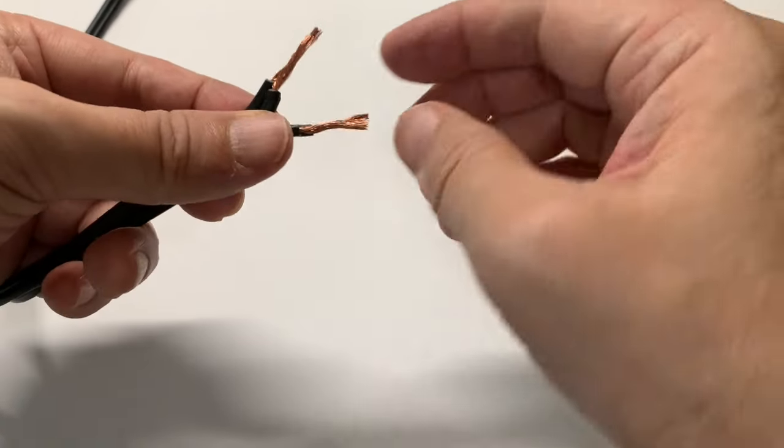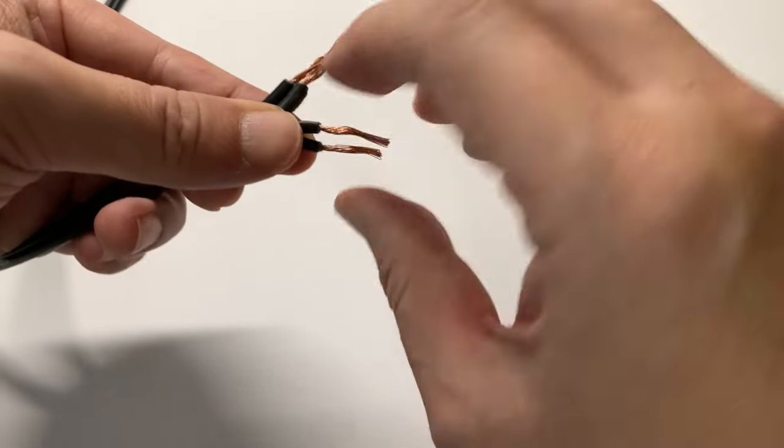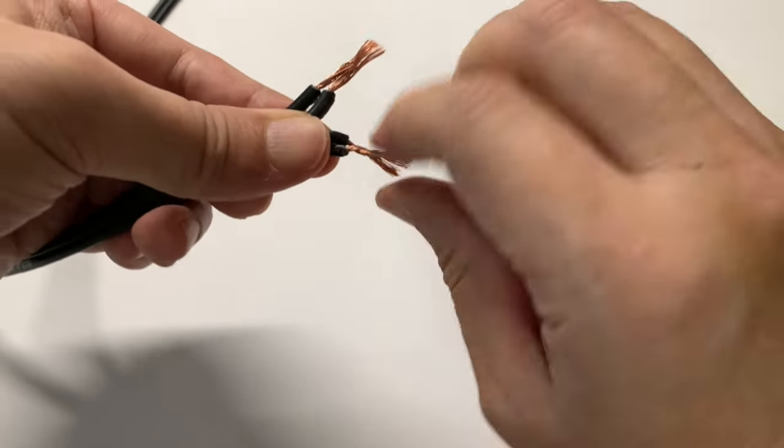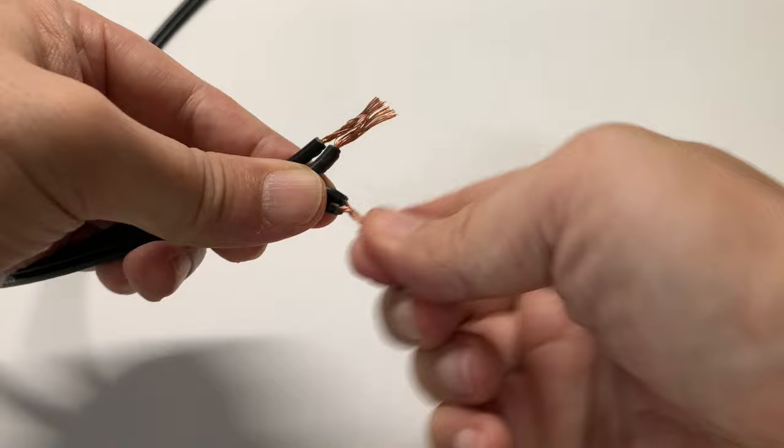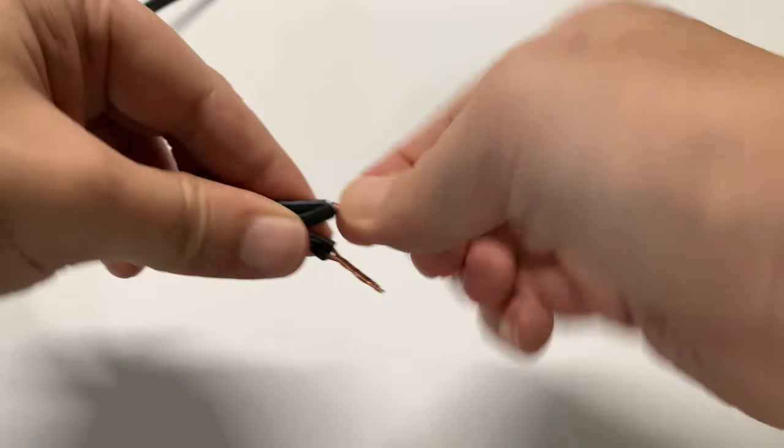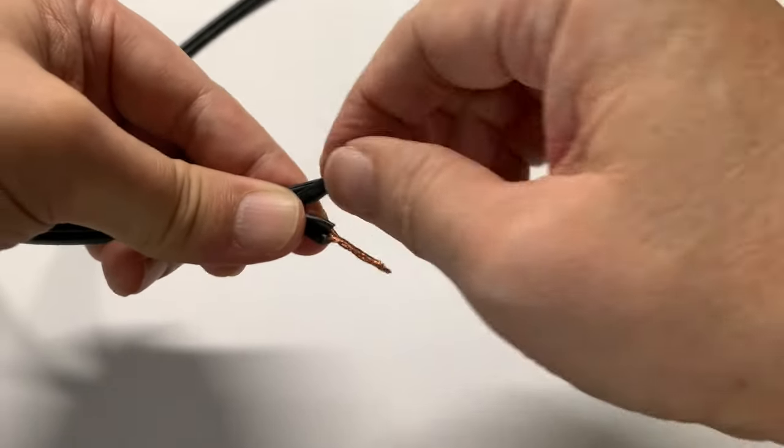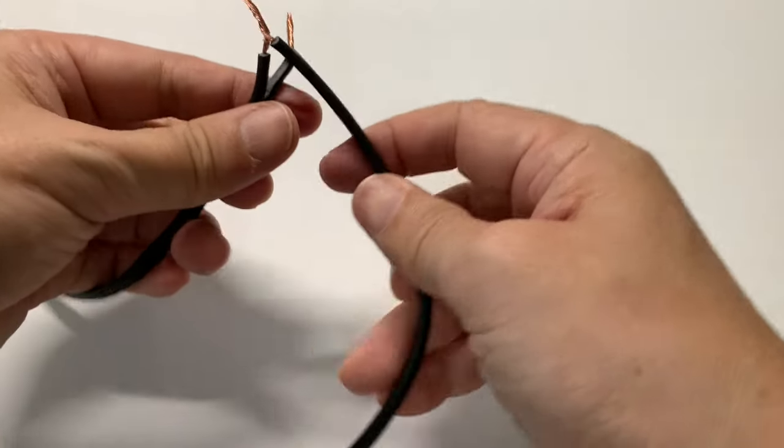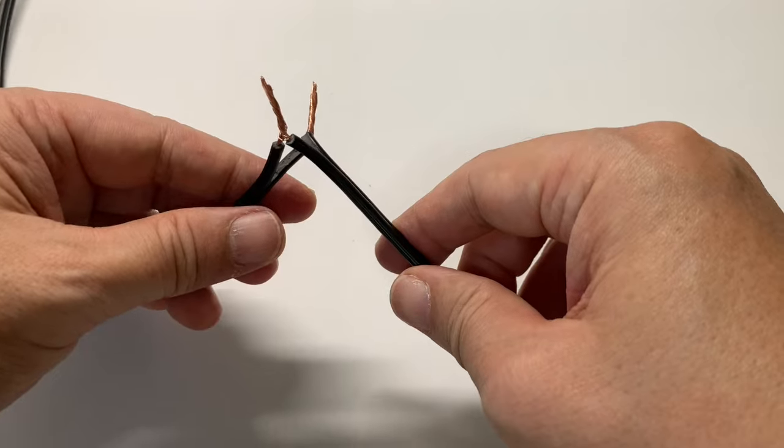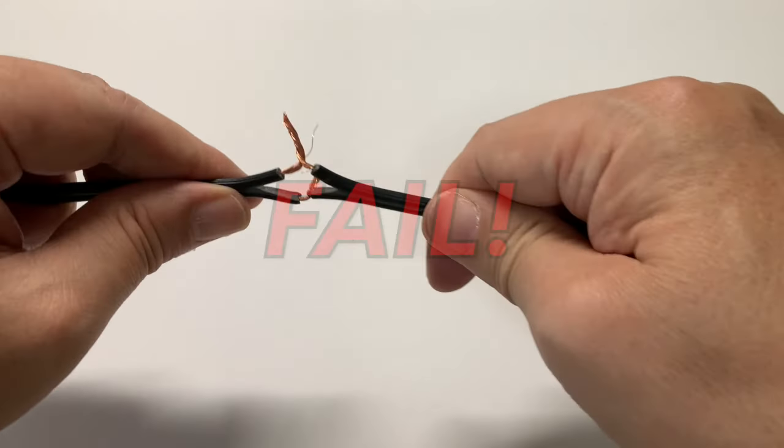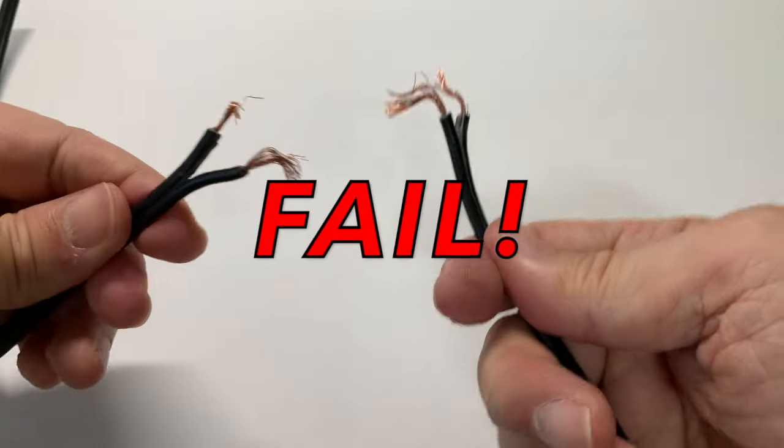This method of twisting two wires together is very common, and it seems there's nothing wrong with it. But in fact, it results in a very weak mechanical bind. This is a safety hazard.